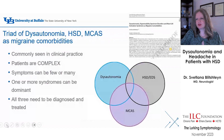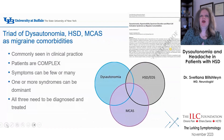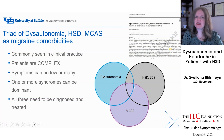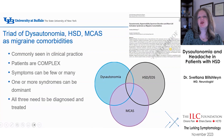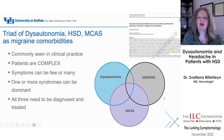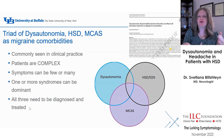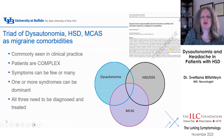We come to the important triad of dysautonomia, hypermobility spectrum disorder, and mast cell activation syndrome as migraine comorbidities. These three conditions are overlapping circles — some people have more of one than others, and some have all three. These patients are very complex, and all three syndromes need to be diagnosed and treated. Oftentimes I see doctors treat one but not the others — I see neurologists treat migraine but don't diagnose dysautonomia or mast cell, making it very hard to control headaches.